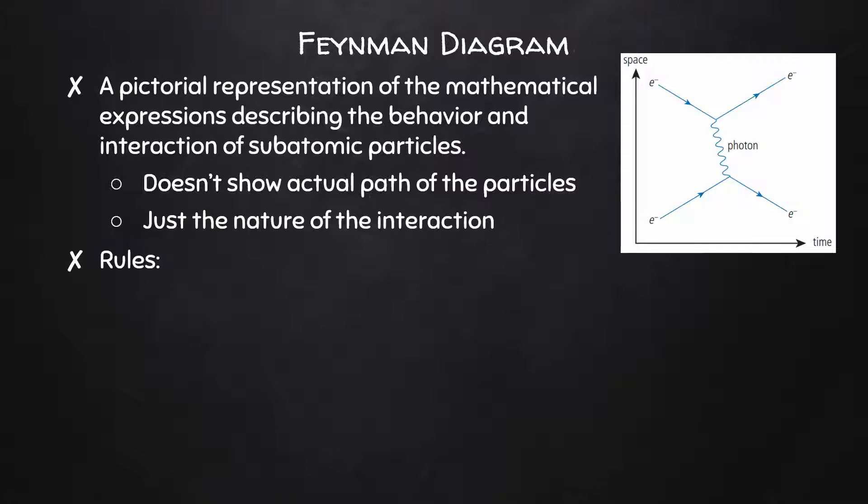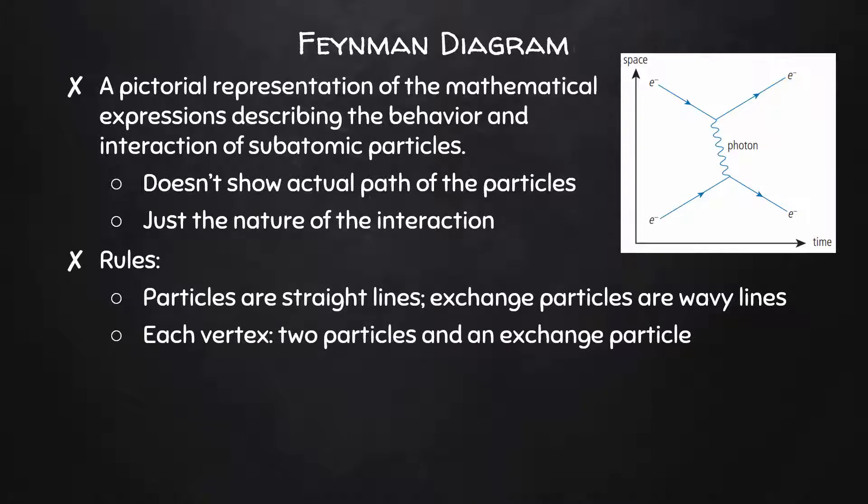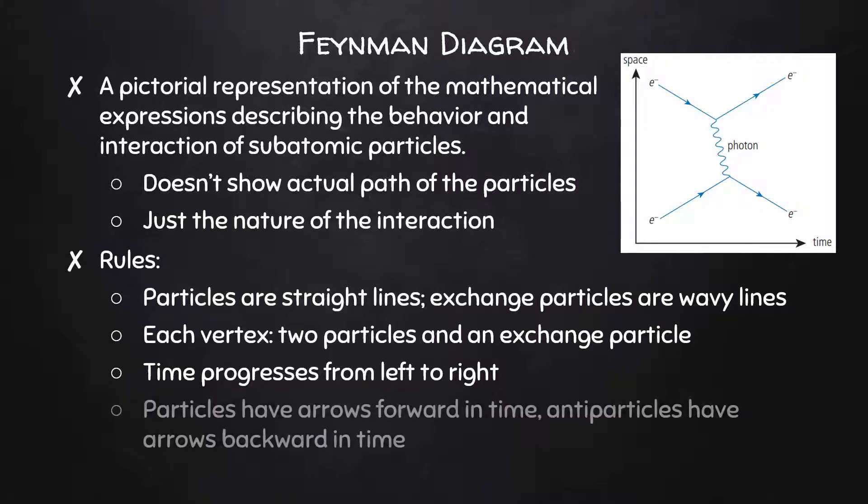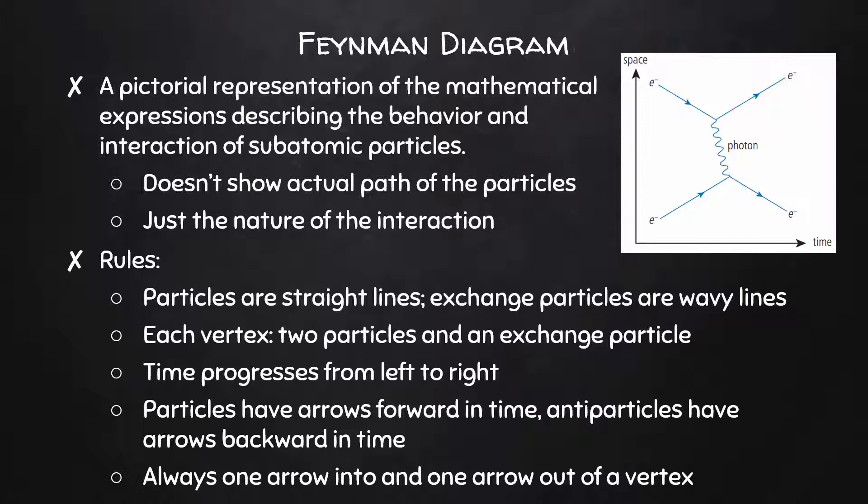There are some rules for either drawing your own Feynman diagrams or interpreting a Feynman diagram. Particles are always represented by straight lines and exchange particles are wavy lines. At each vertex, there will be two particles and an exchange particle. Time typically progresses from left to right in a Feynman diagram. Particles have arrows that point forward in time and antiparticles have arrows that point backward in time. And finally, there's always one arrow into and one arrow out of a vertex.